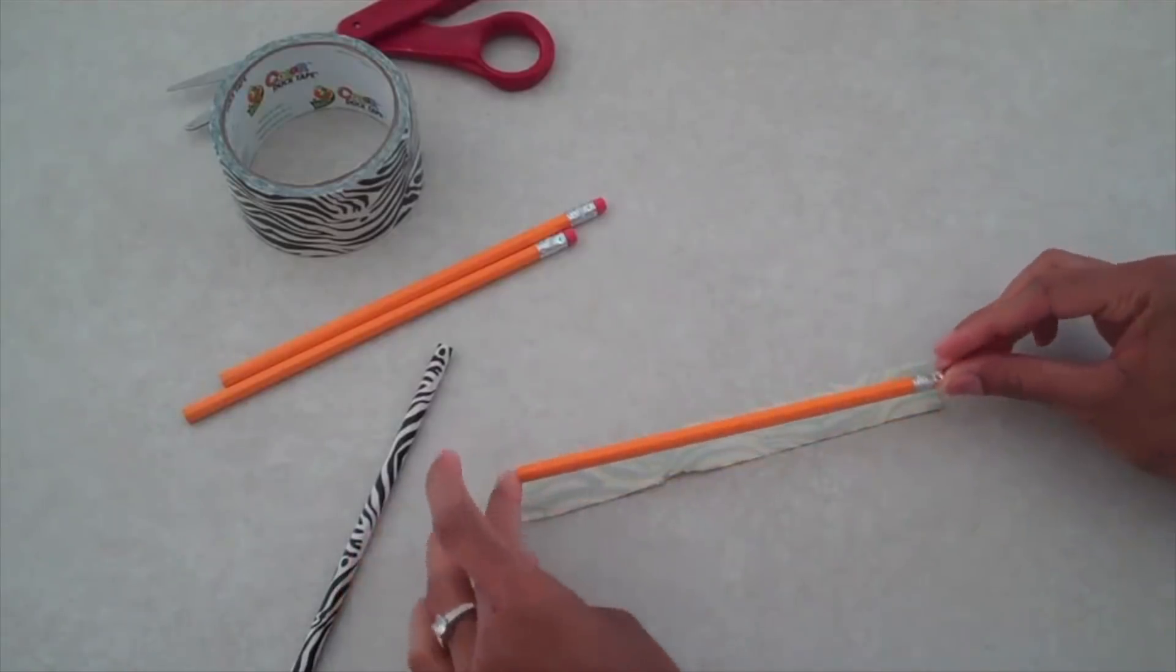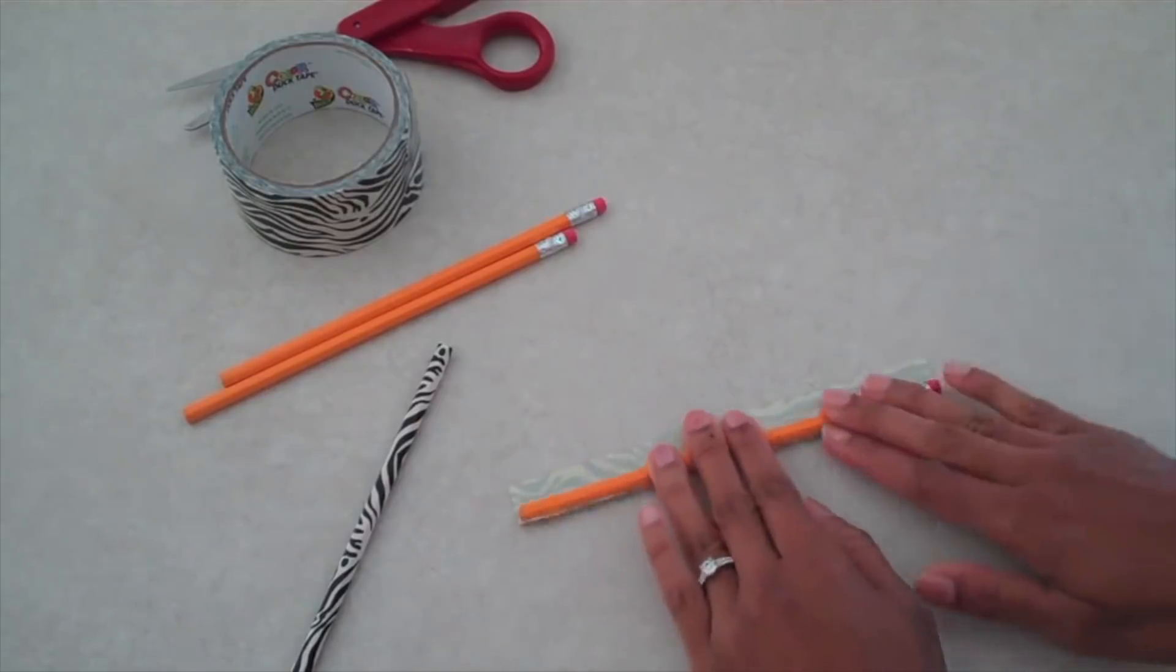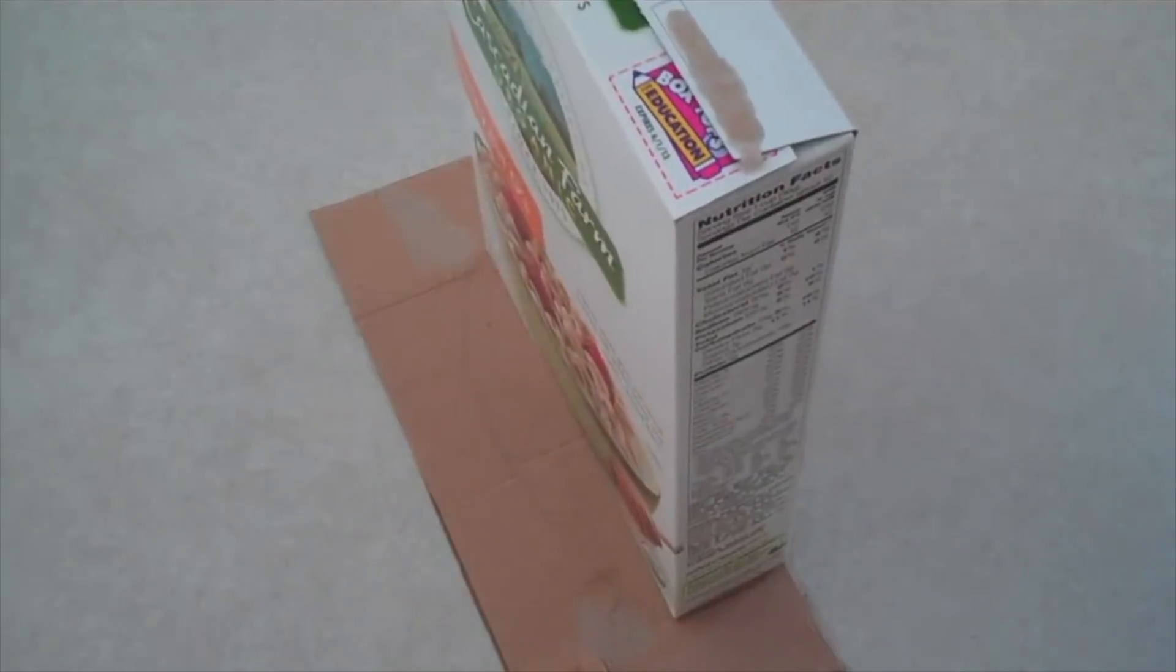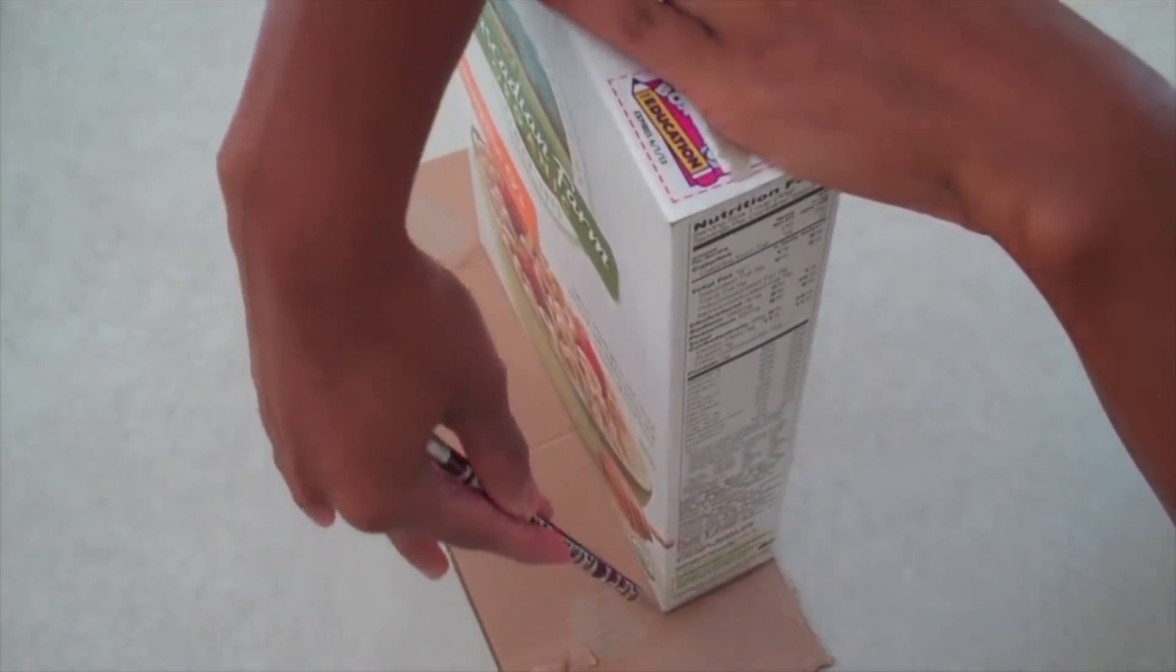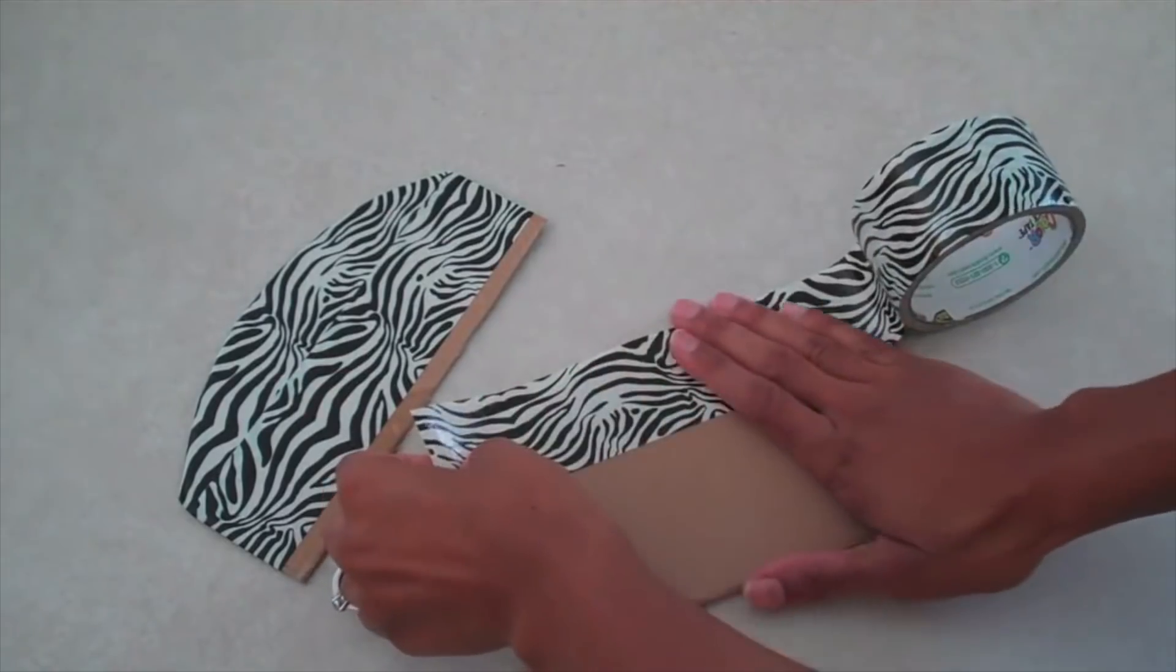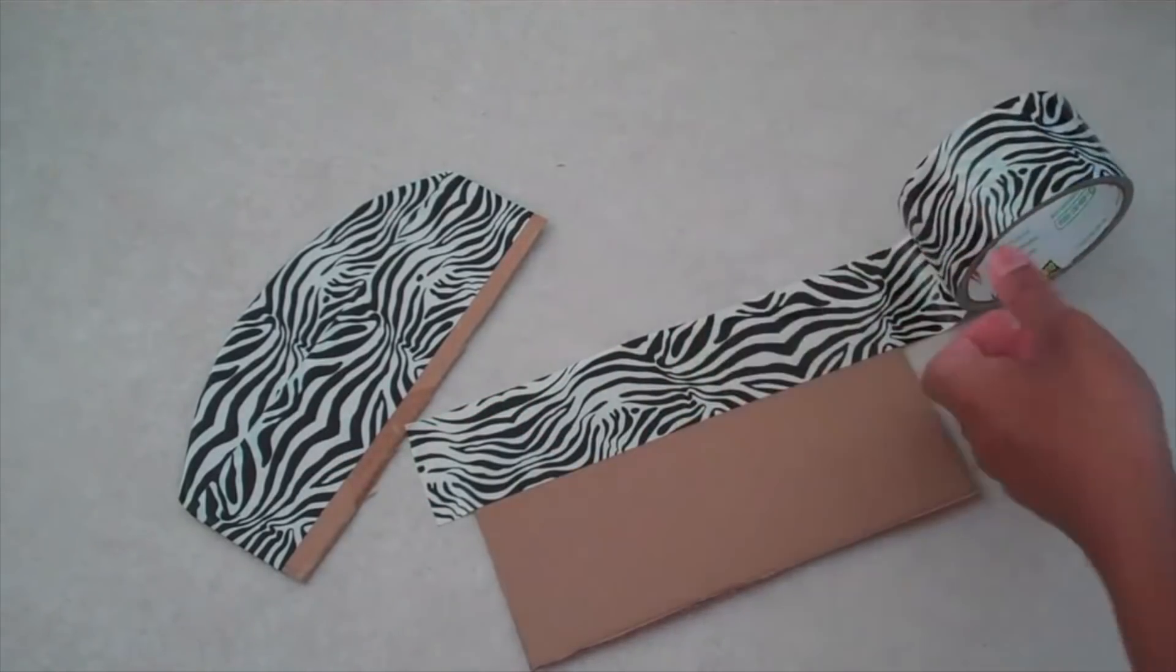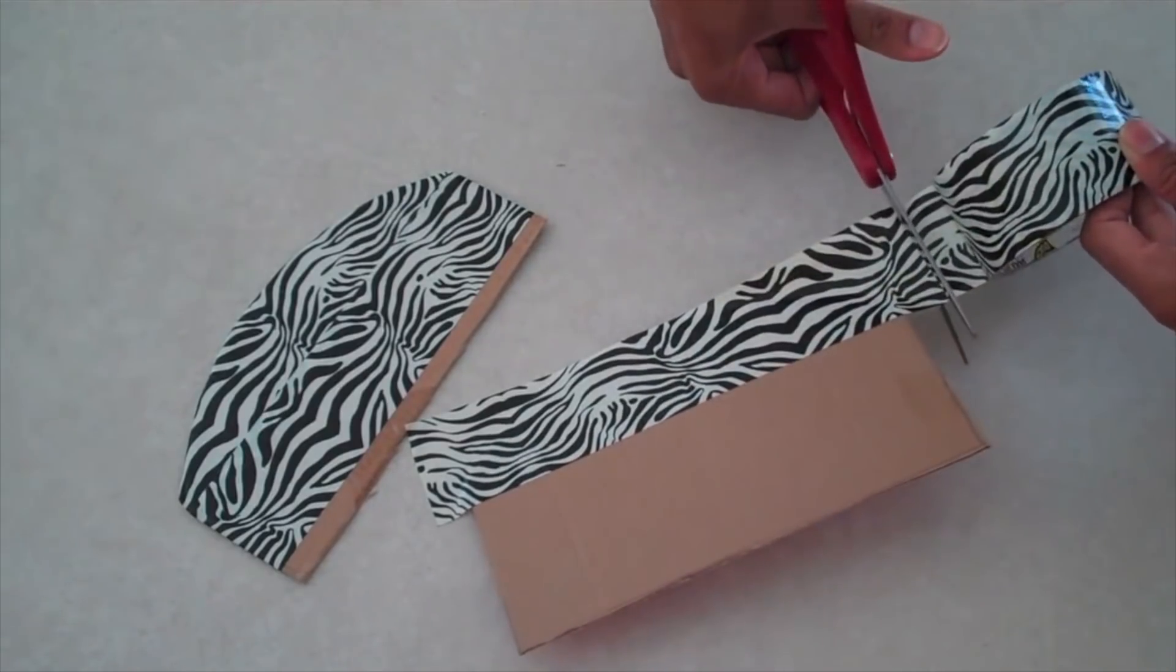The first thing I'm going to do is cover my pencils in duct tape. Using the spare cardboard, I'm going to trace out a headboard and a footboard. Then I'm going to cover them in duct tape. You can choose to use fabric or paper or whatever else. But I'm just going to use duct tape because it's easy and it's fast.